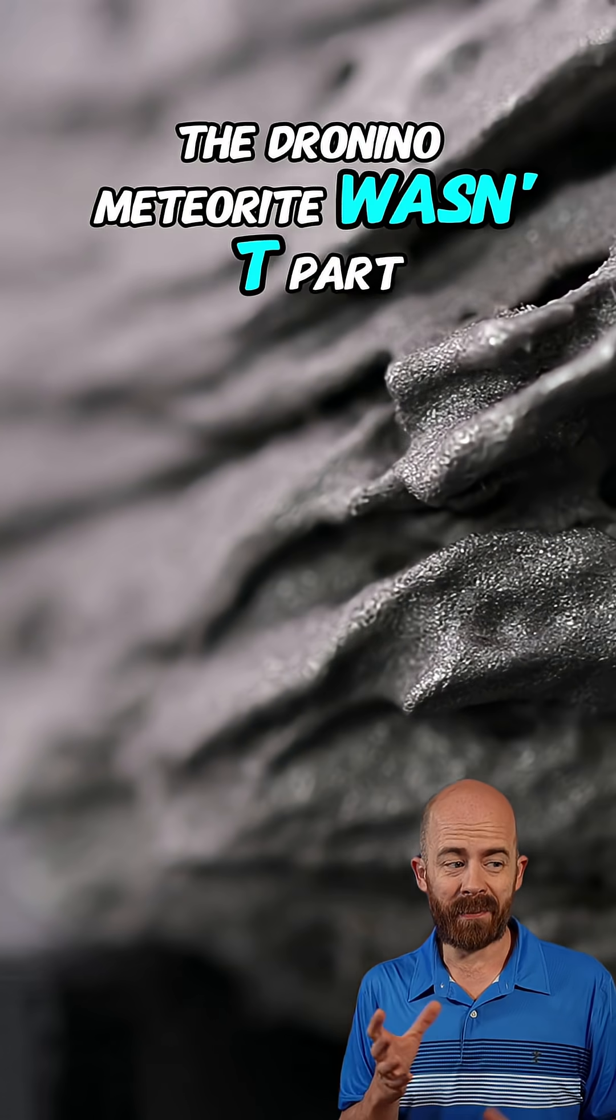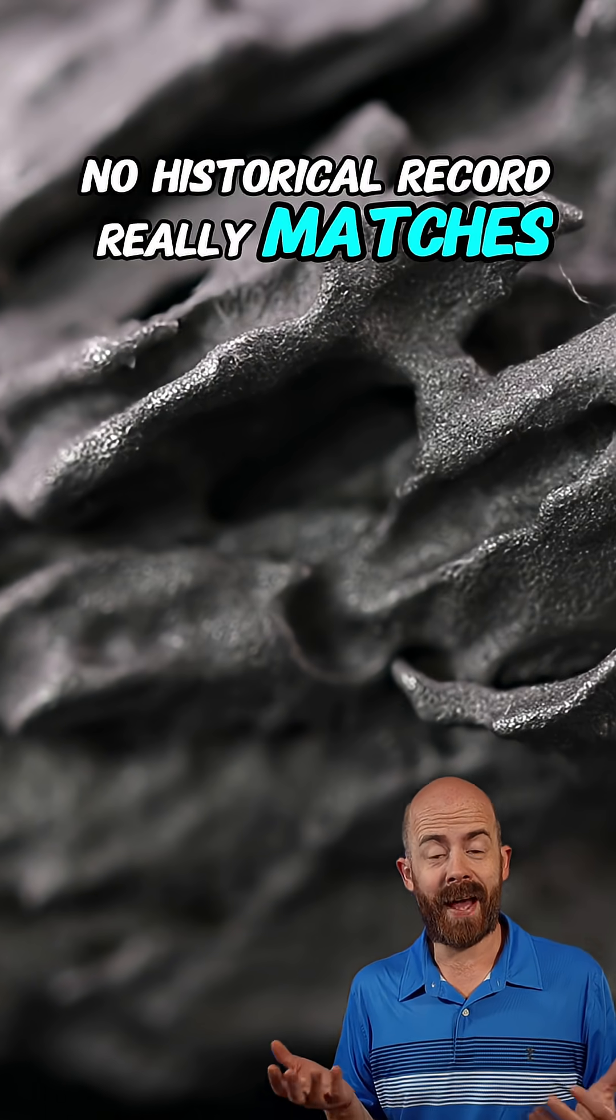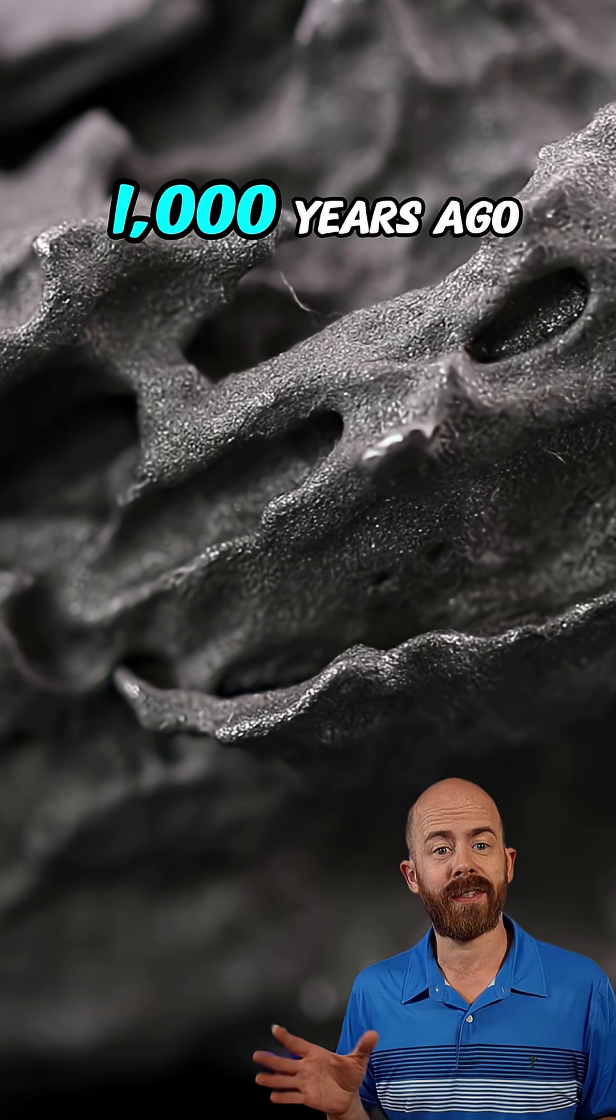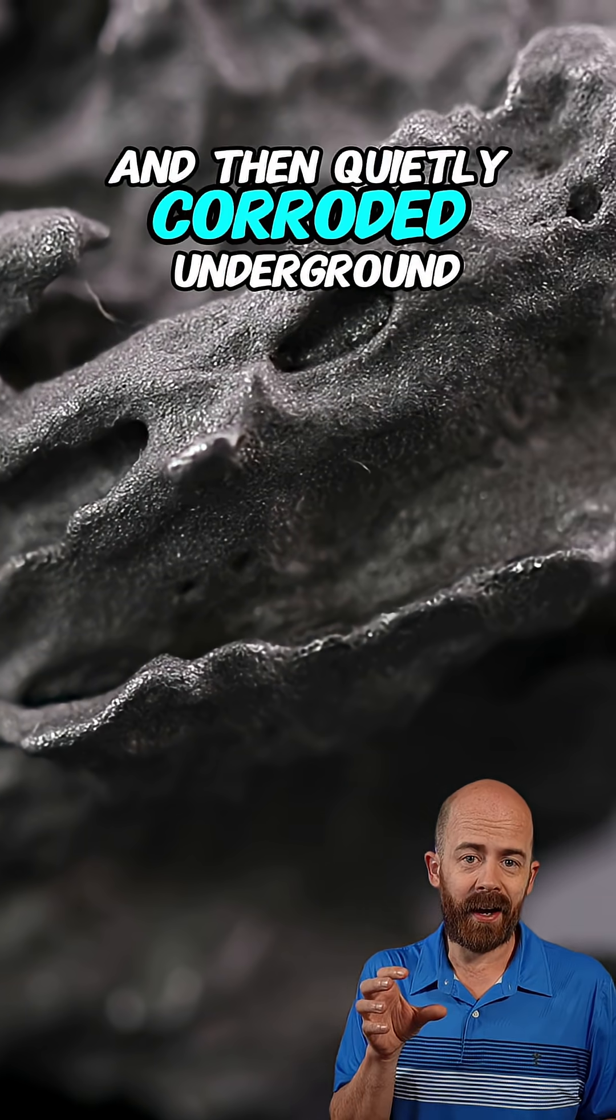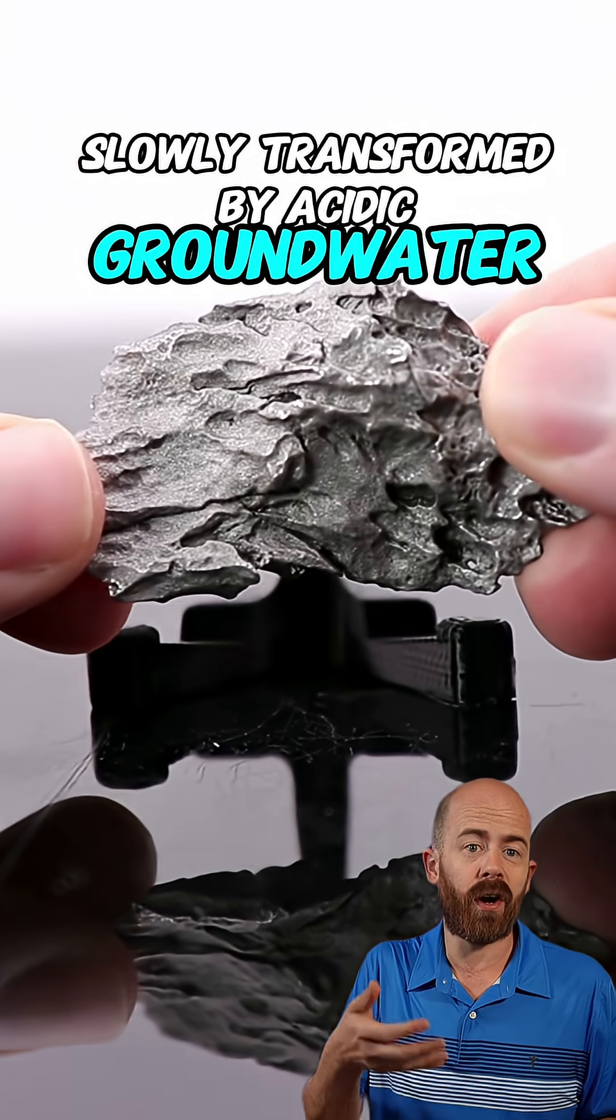The Dronino meteorite wasn't part of any known observed fall. In fact, no historical record really matches it, but scientists estimate it fell to Earth over a thousand years ago and then quietly corroded underground, slowly transformed by acidic groundwater over time.